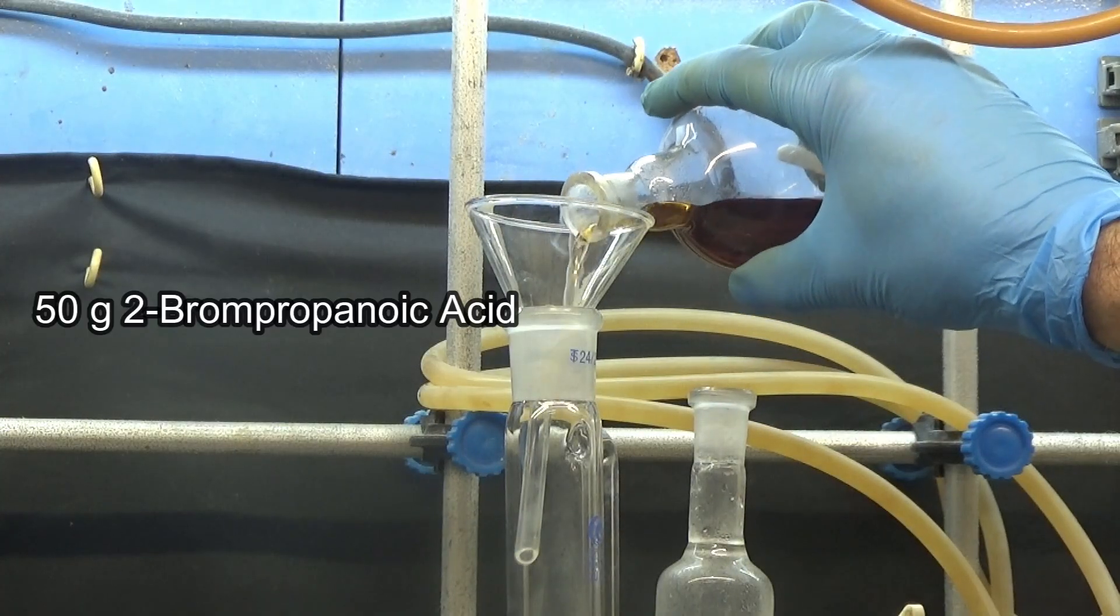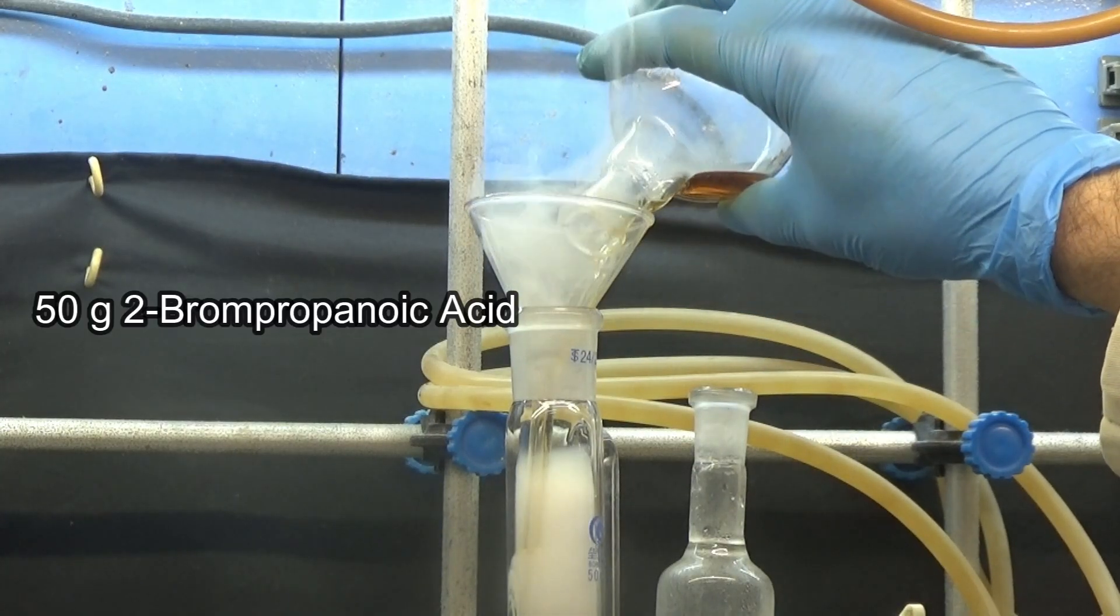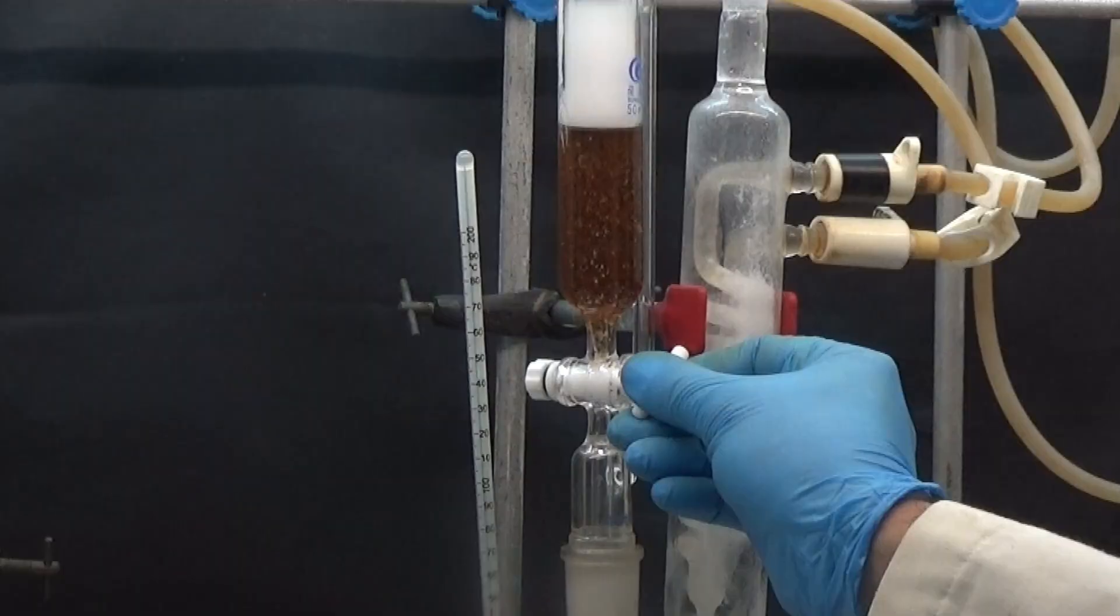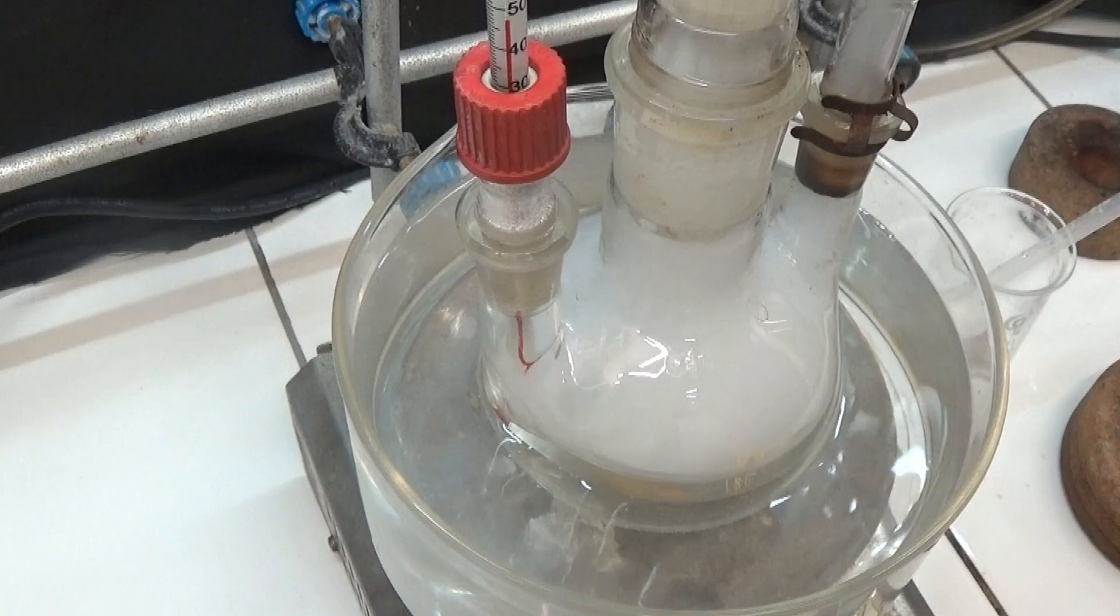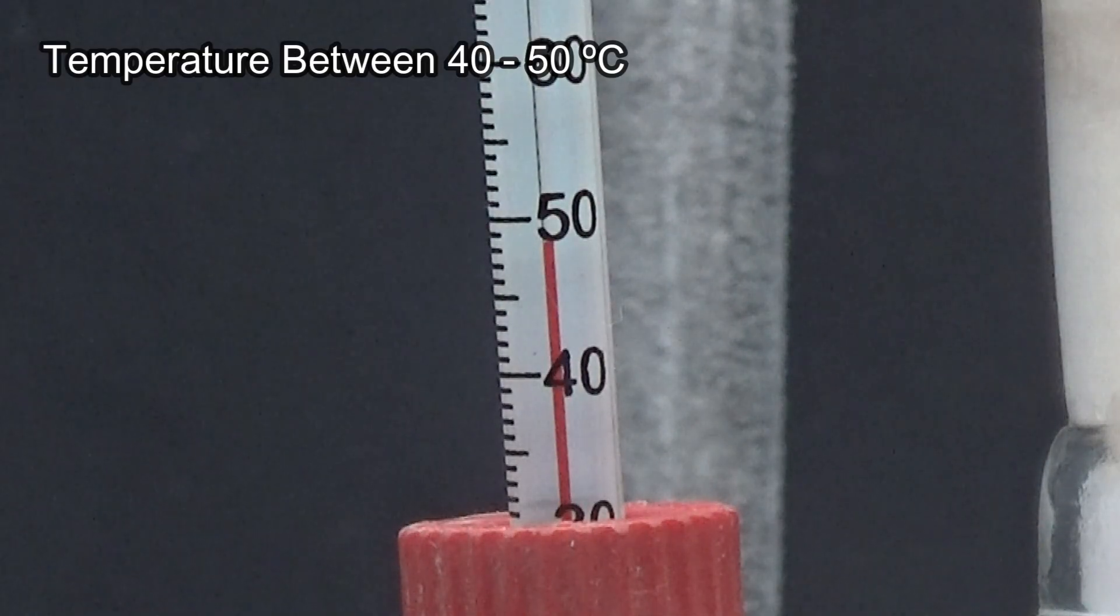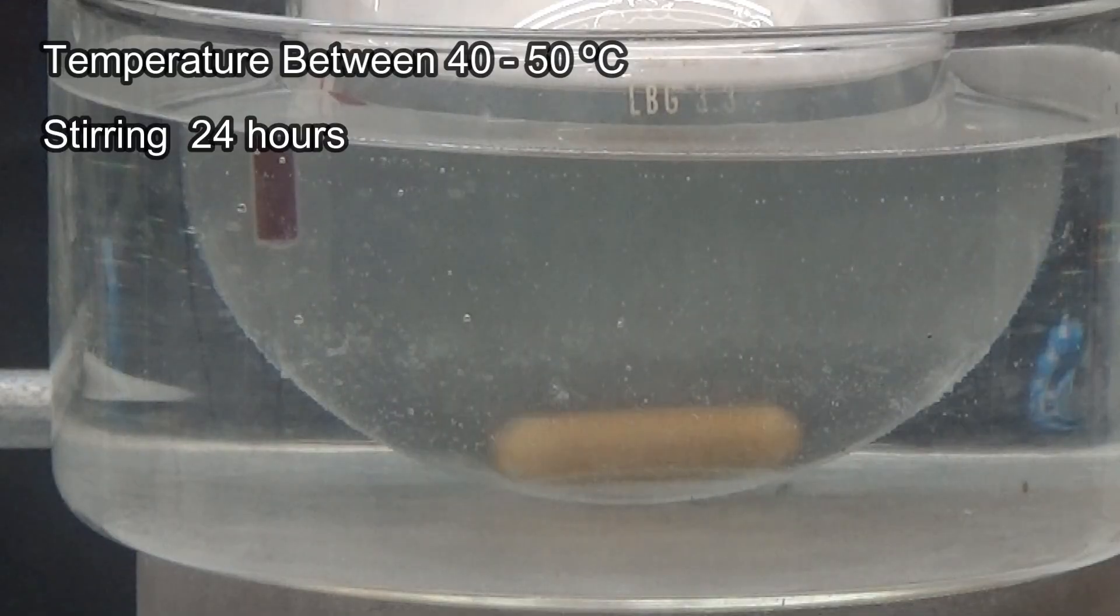Once all the ammonia has been added, put 50 grams of 2-bromopropanoic acid in the funnel. Slowly add the acid with stirring and maintain the temperature between 40 and 50 degrees. Leave stirring for 24 hours.